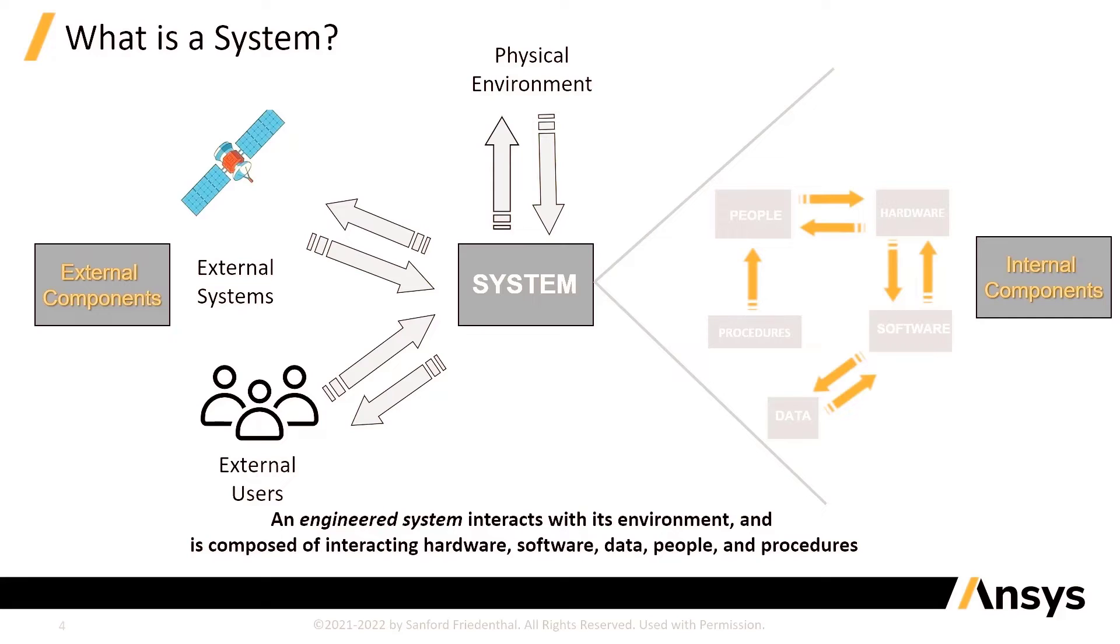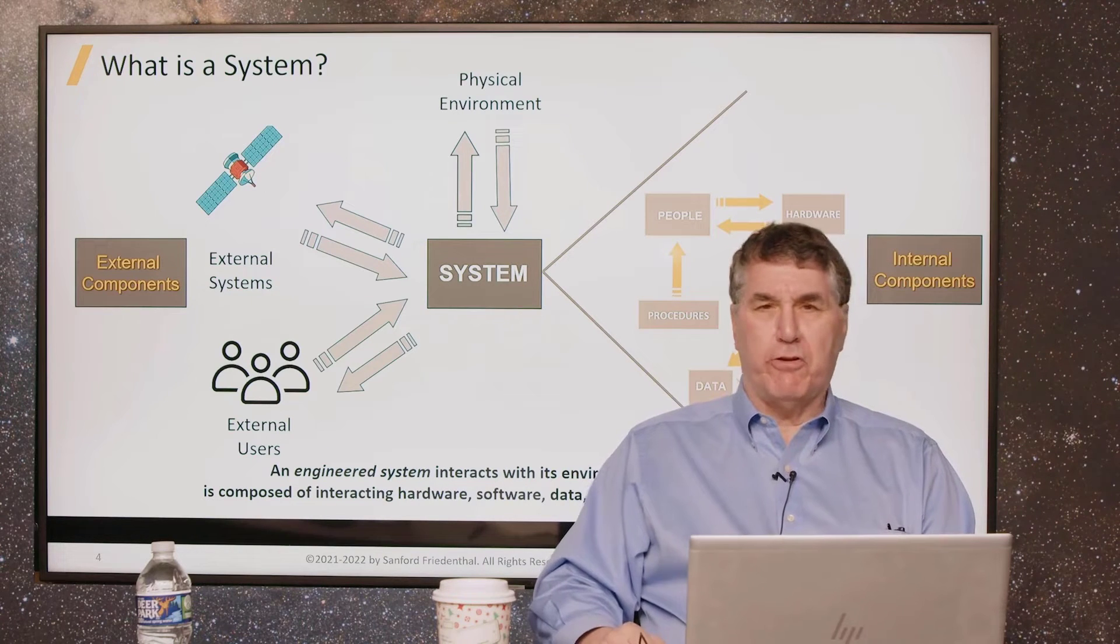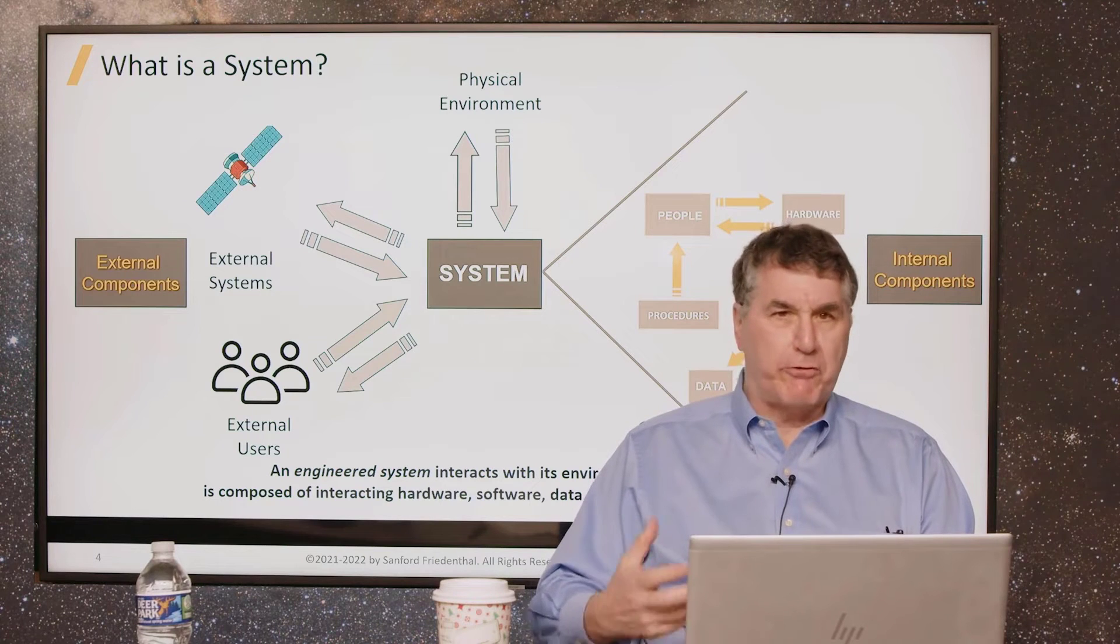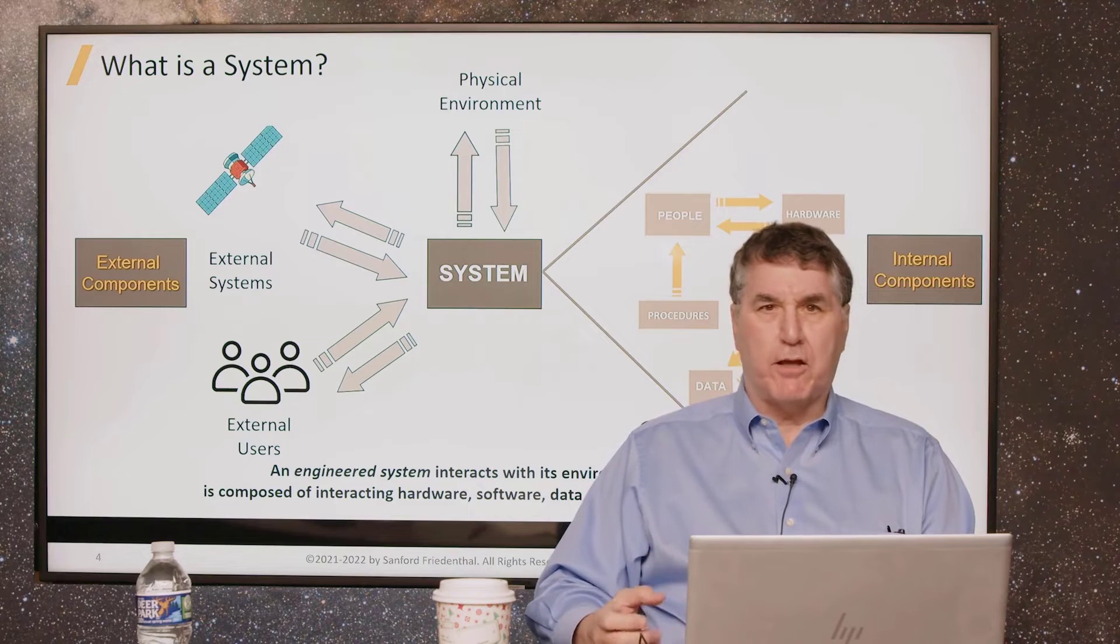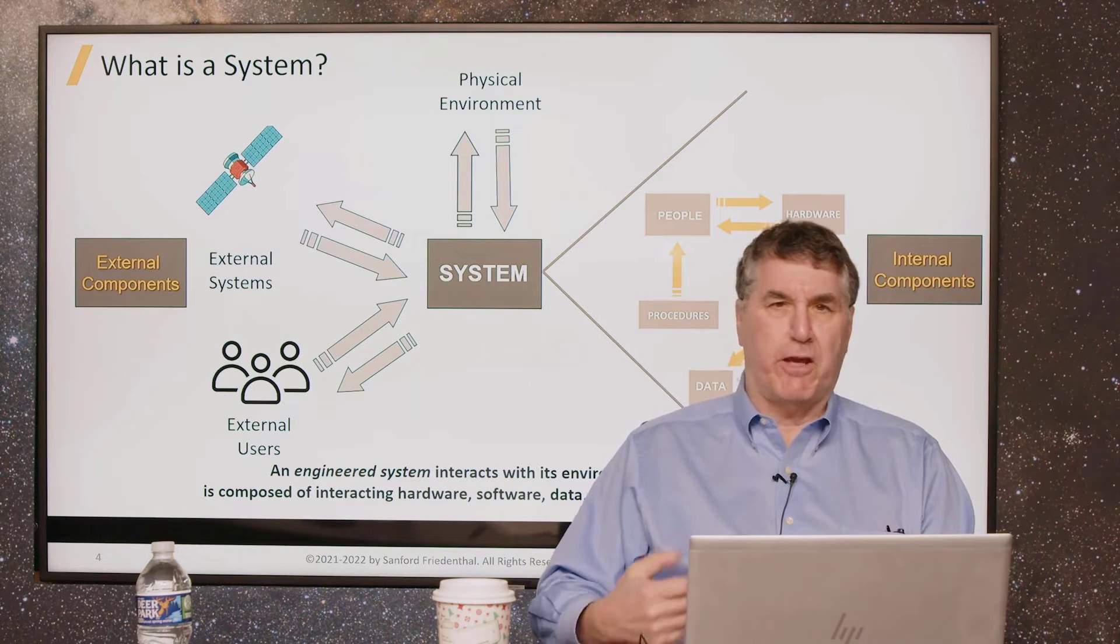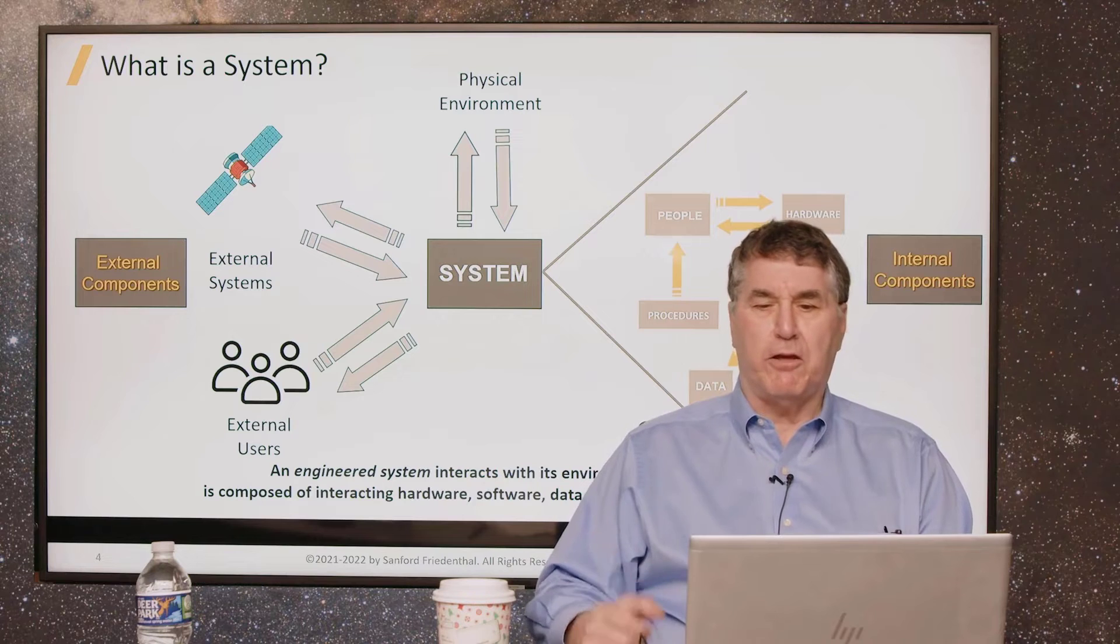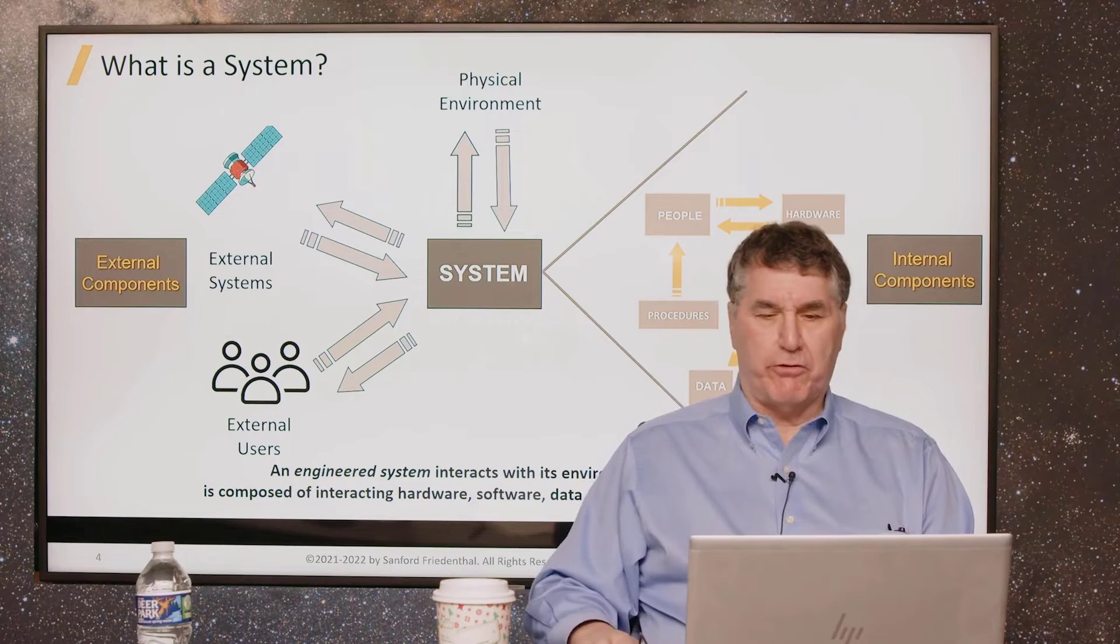This is often called a white box view, where you expose the internal workings of the system. There's different documentation that we use to describe the white box view. We have specifications of the components, interface control documents among the components and subsystems, and design documentation such as a system design or architecture description document. These are all used to specify these different elements of the system.